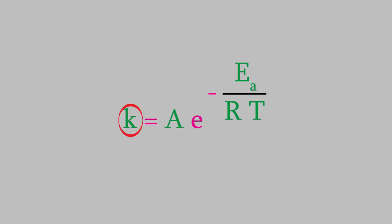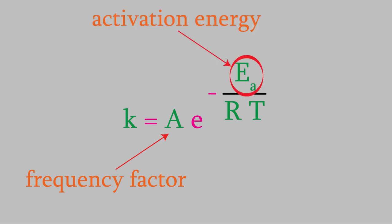Here, k is the rate constant, and on the right side is A, which is called the frequency factor. I'll talk more about that in a moment. Then there's e raised to the power negative EA over R times T. The e here is the same e that we saw when we talked about logarithms in video number 11. If you've forgotten what e means, you might want to go back and watch that video to refresh your memory. EA is the activation energy, which we talked about just a minute ago. R is the gas law constant, and T is the temperature.